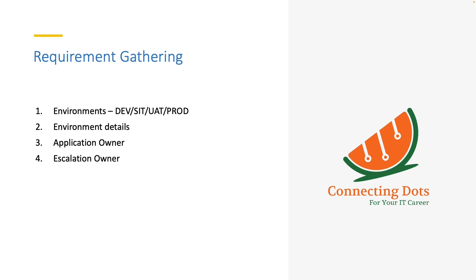Inform the application team that you will take two environments: production for sure, and second either SAT or UAT. DEV is not a good idea because it is meant for developers. SAT and UAT are used for testing purposes. UAT is where business testing will be performed, so I suggest going with UAT as the non-production integration.